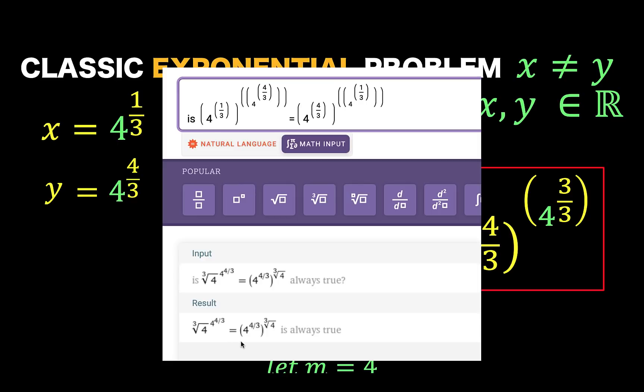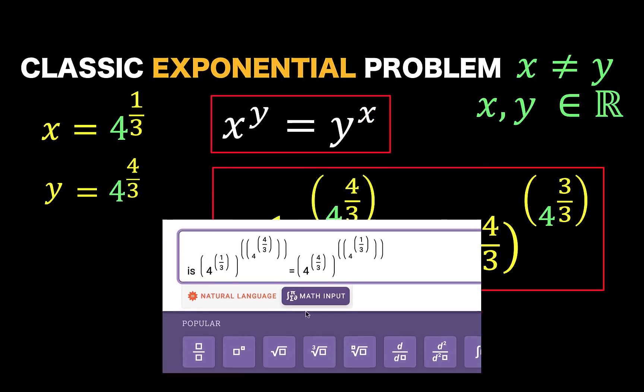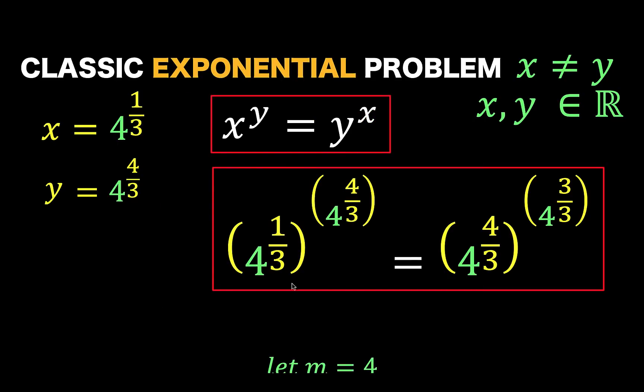This has an advanced AI technology to evaluate whether our equation is always true or not. And Wolfram Alpha says that this equation is always true. So, at m equals 4, we verified that these values for x and values for y are indeed a solution set for the original equation.